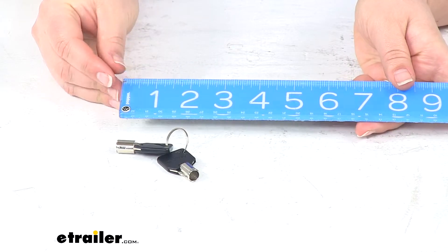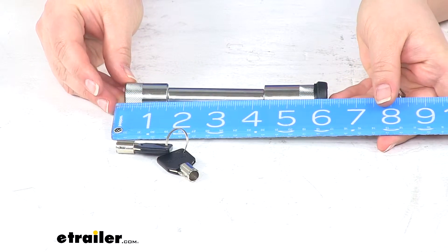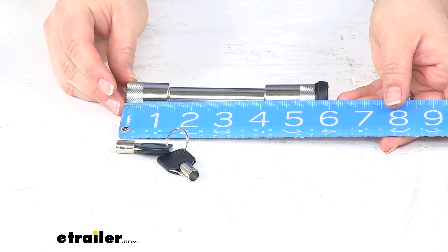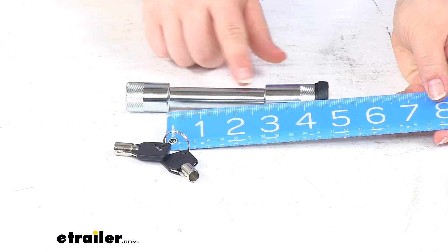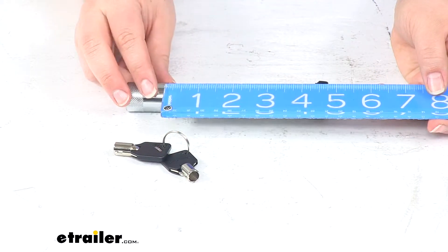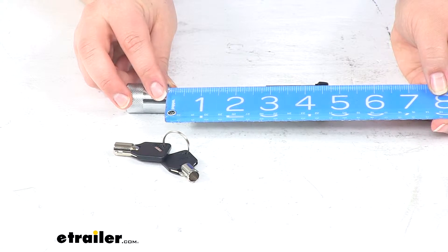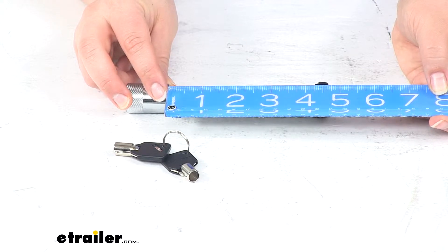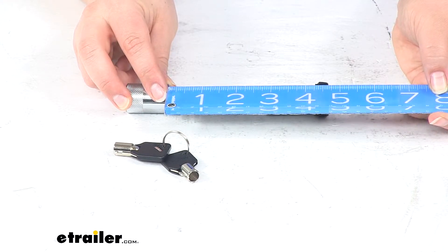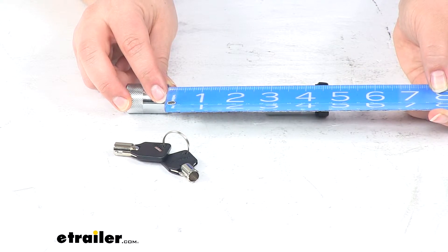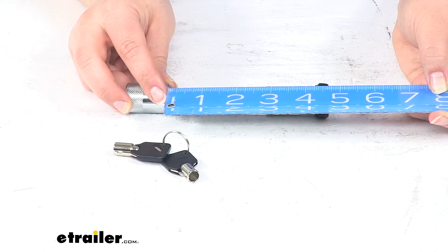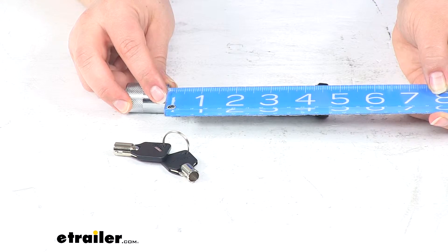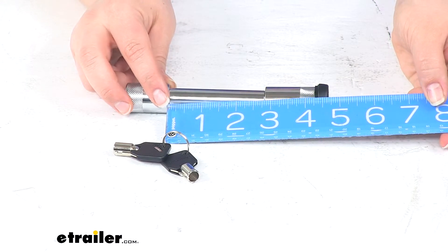From end to end the lock measures about 6 inches long. The space in between the two ends is about 2 and 3 quarters, or just over about 2 and 13 sixteenths if you want to get really exact.